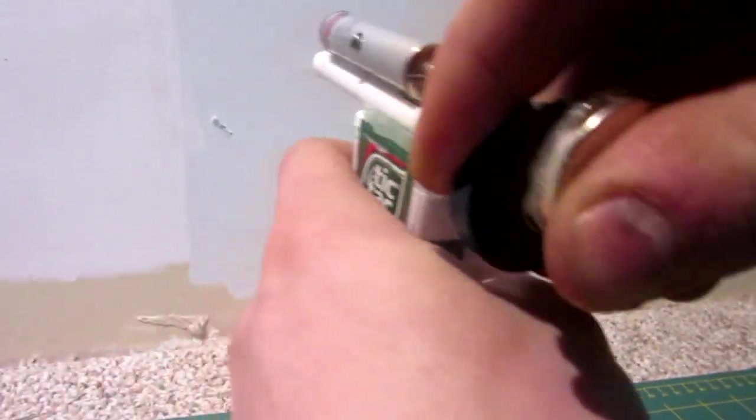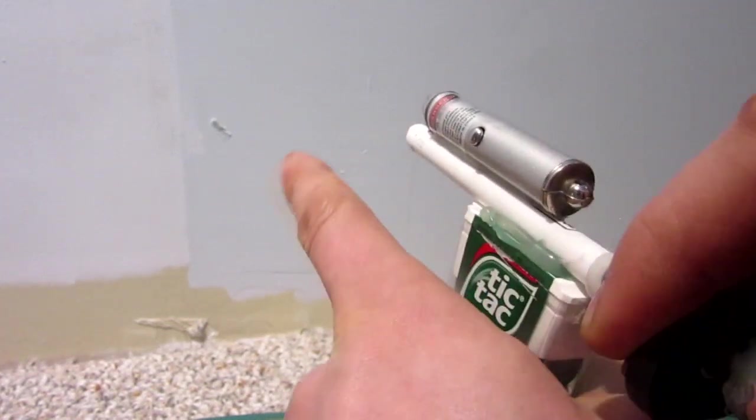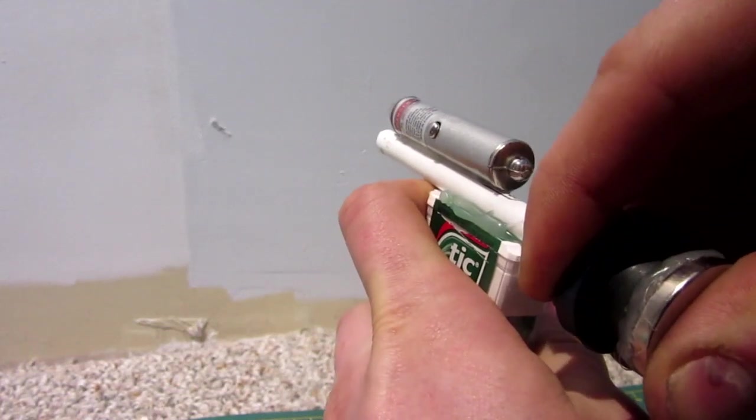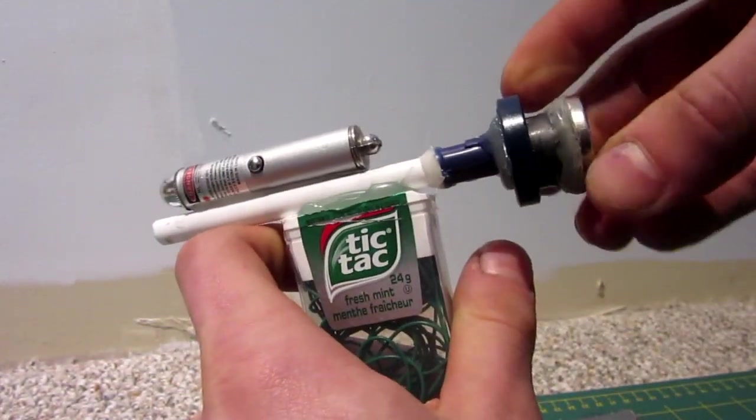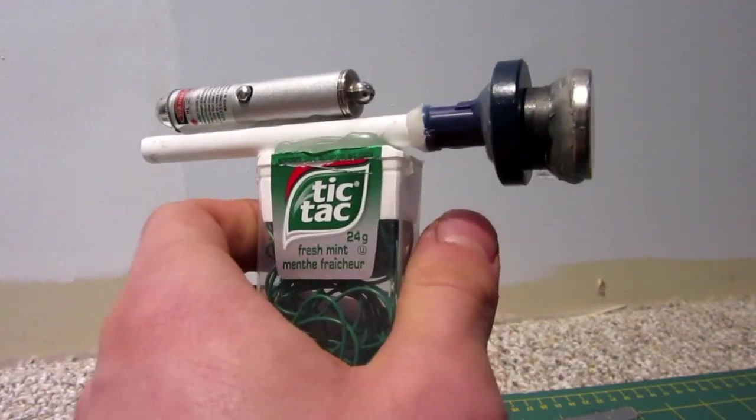Here we go with the last shooting test. Hopefully you guys can see the BB leave the barrel or the magnet and hit the wall. Firing in three, two, one. That one was a little weaker. Changes every time. But essentially, there's the magnet gun. Hope you guys get the idea.